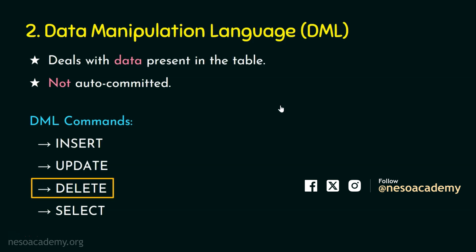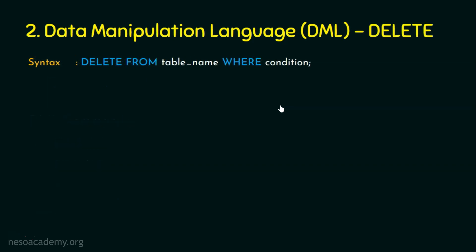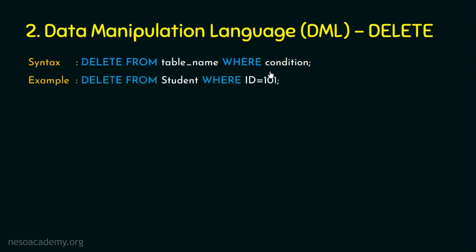Delete is also a DML command for deleting the rows. Since this is going to delete the data part only, it is also a DML command. The syntax is: DELETE FROM table_name WHERE condition. This reads like an English statement: delete from table where this condition. Let's see an example.